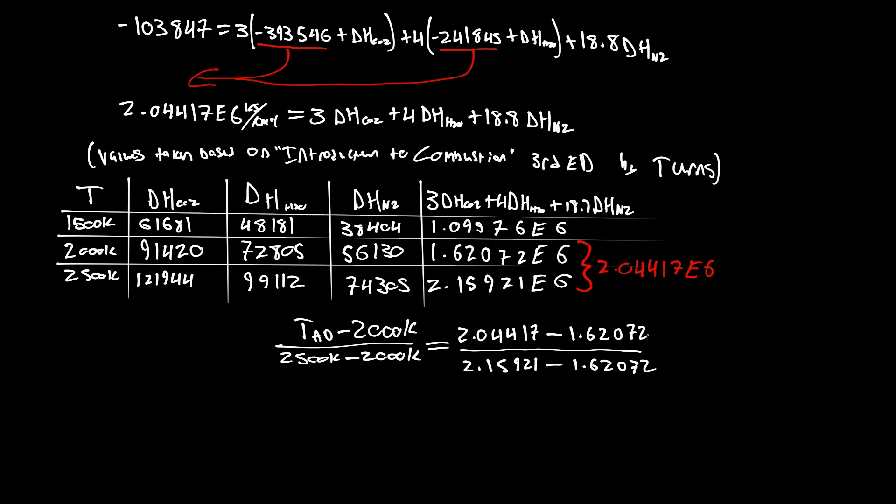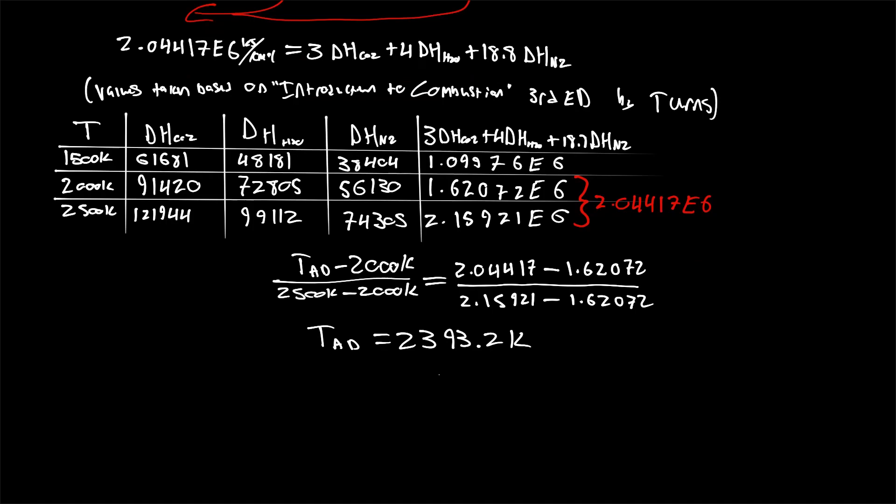This is just a simple linear interpolation. It's the actual value minus the lower value divided by the upper value minus the lower value to interpolate linearly between two values in a table. Very quick, very simple.